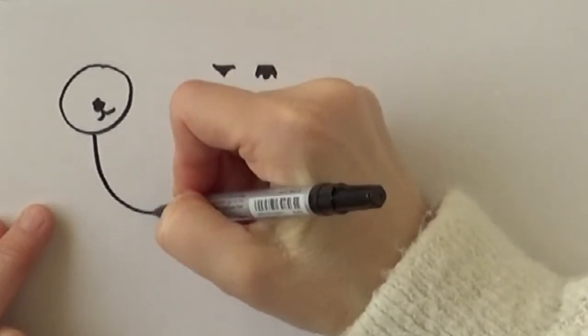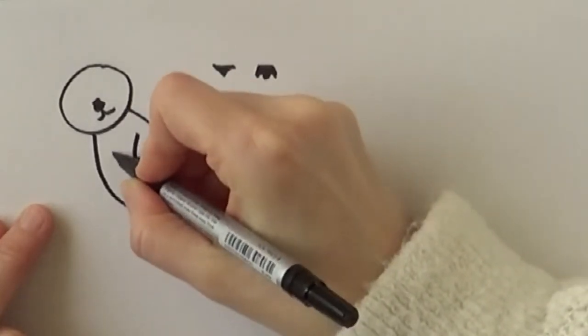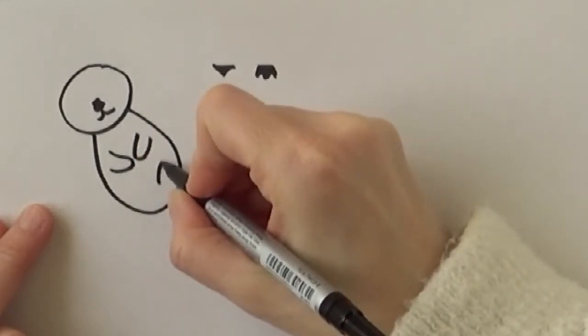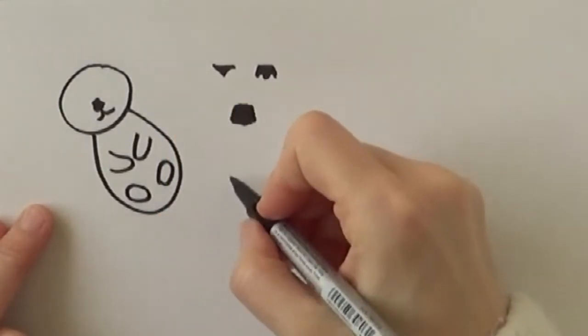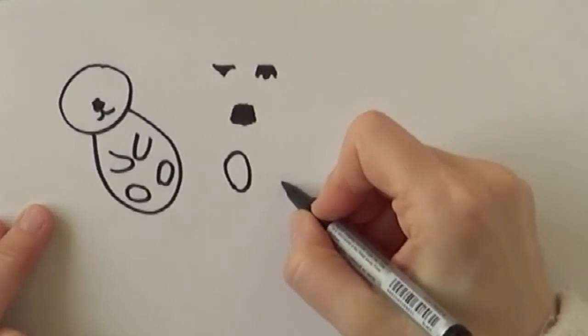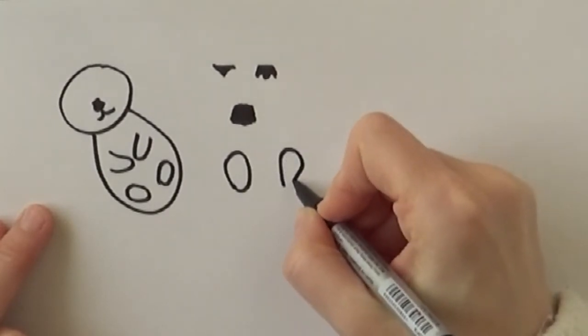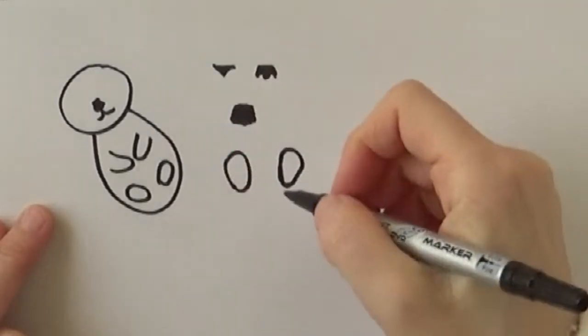Then we'll just draw an oval and some half ovals for the legs and paws. If you want, you can do this instead of normal oval, you can make them like this. So they're more like fanned out, but both work.